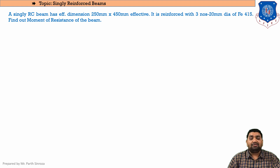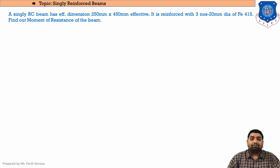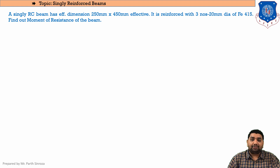What do we mean by moment of resistance of the beam? Basically, moment of resistance means the maximum bending moment that the beam can carry. First we need to find the relation between XU and XU max, as discussed in the previous sessions. There are three possible cases: the first is the section can be under-reinforced, that is XU less than XU max; the second is the section can be over-reinforced, where XU is greater than XU max; and the third case is it can be a balanced or limiting section, where XU equals XU max.